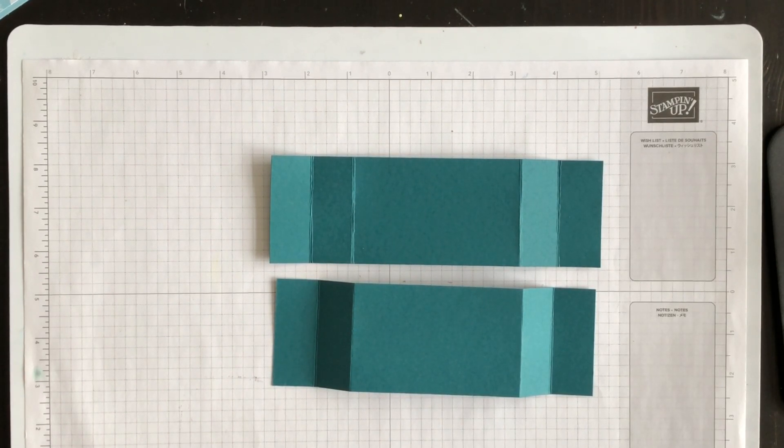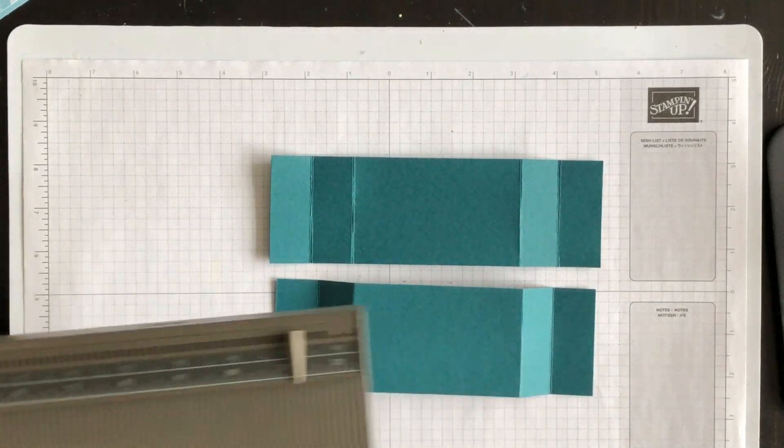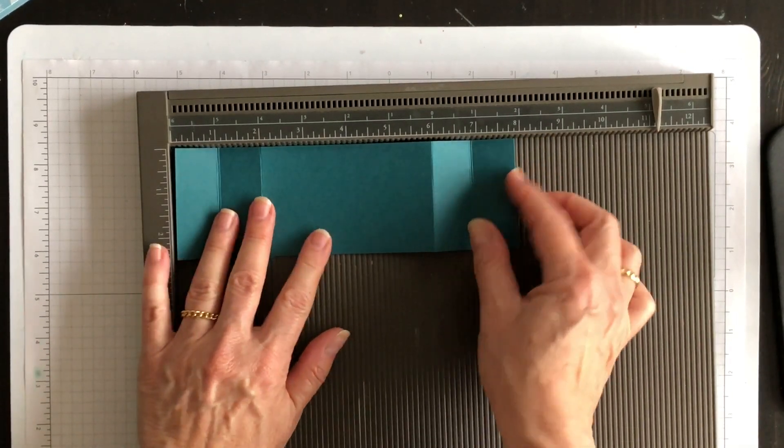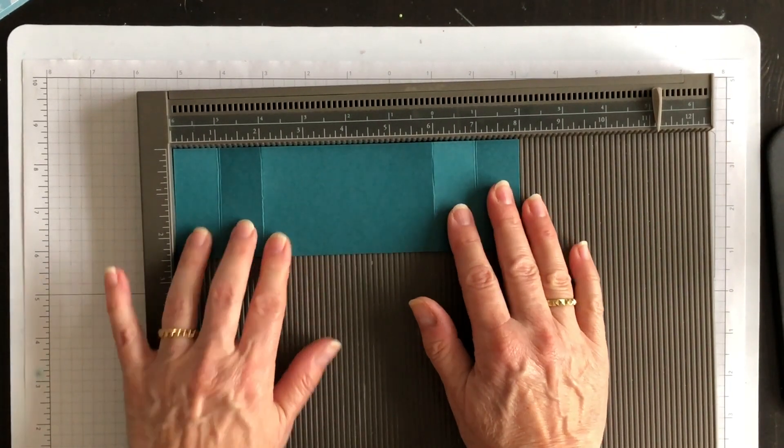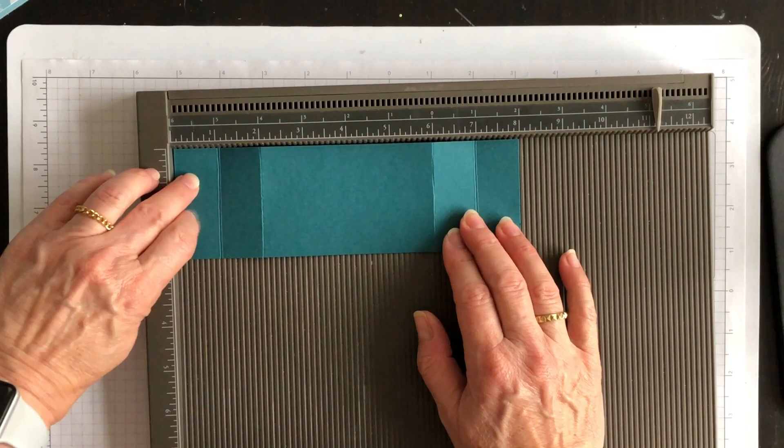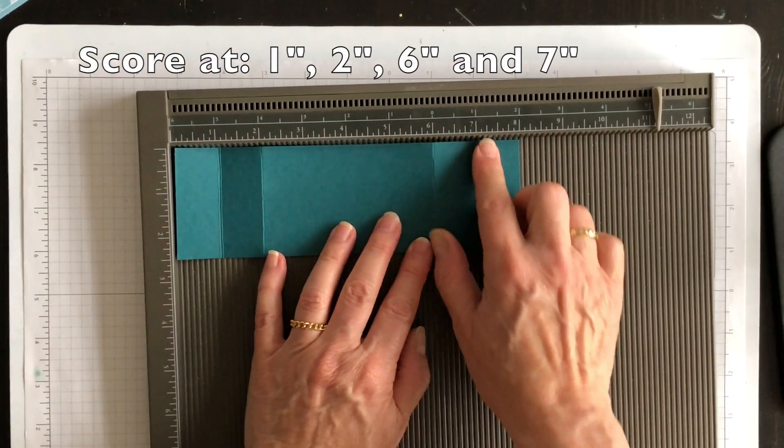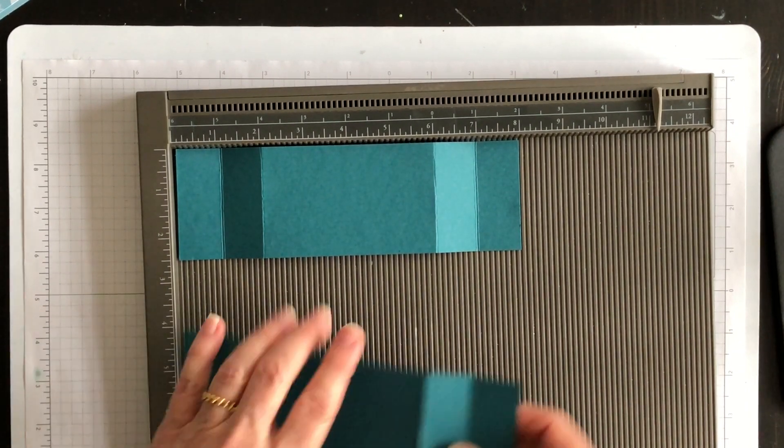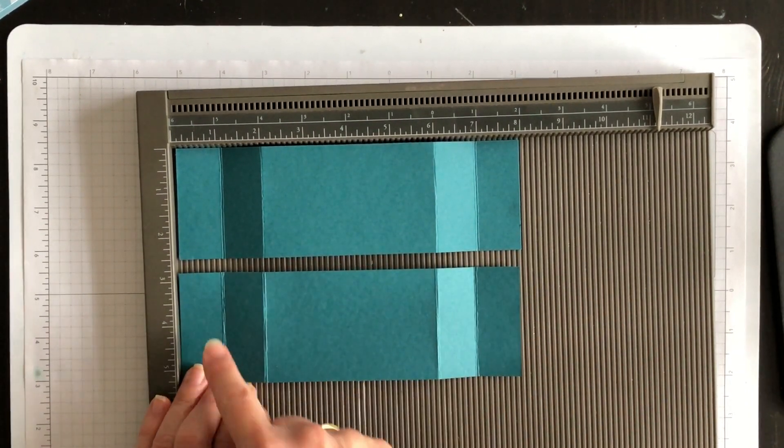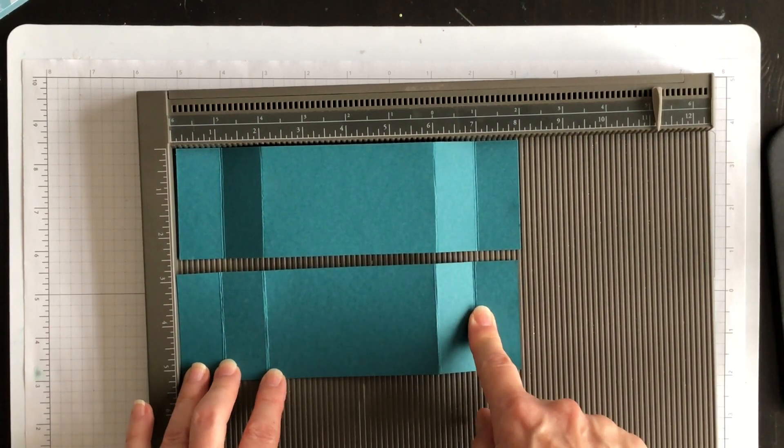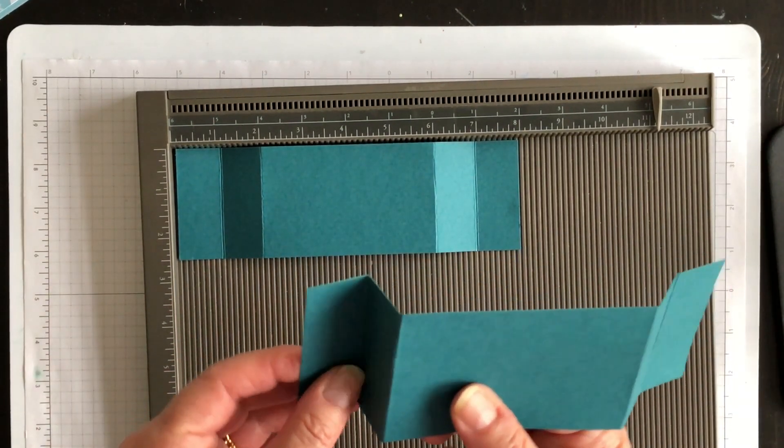And for each of these folds, you want to lay them out the long way across your Simply Scored and you want to score them at one inch, two inches, six inches and seven inches. You do the same for both of them. One inch, two inches, six inches and seven inches.